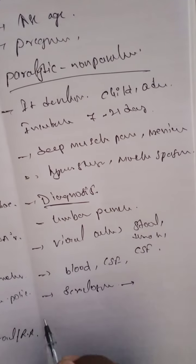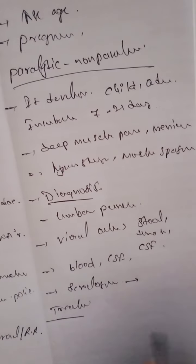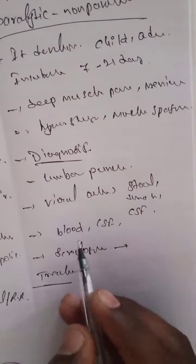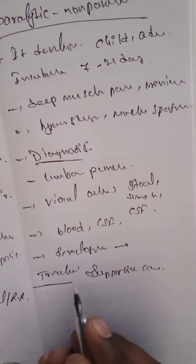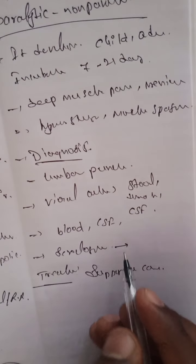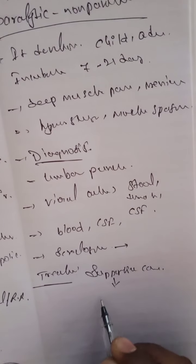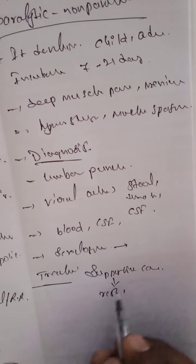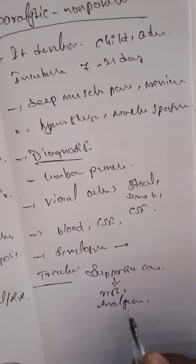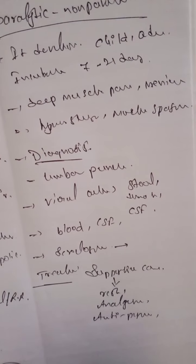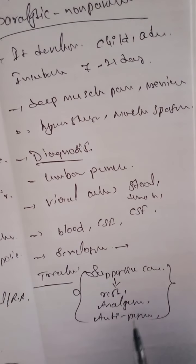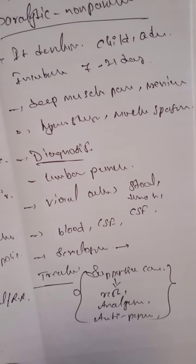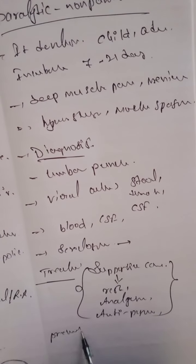What is the treatment? The standard treatment is supportive care for poliomyelitis, including rest. Analgesics and antipyretics are given as needed. Using these drugs, we can control the polio virus in our body.